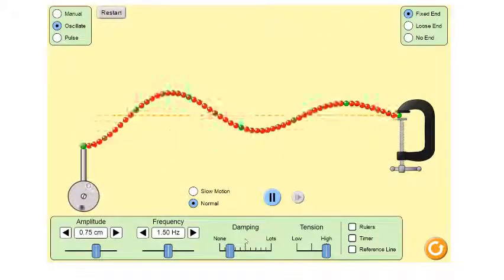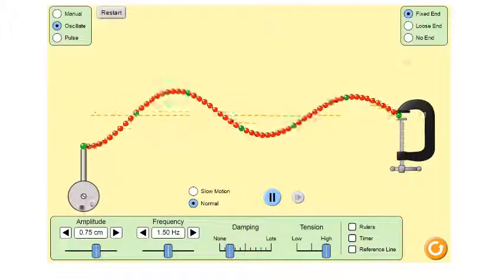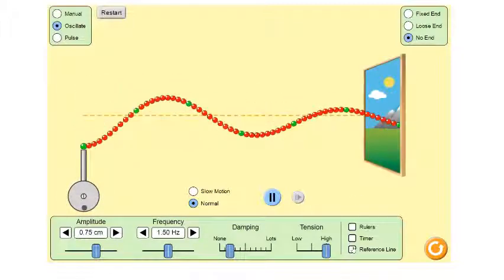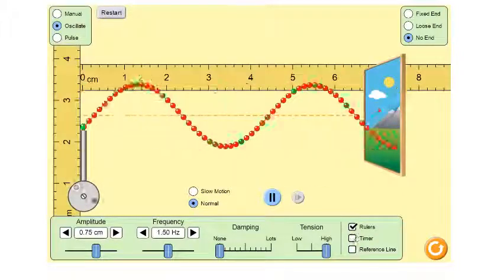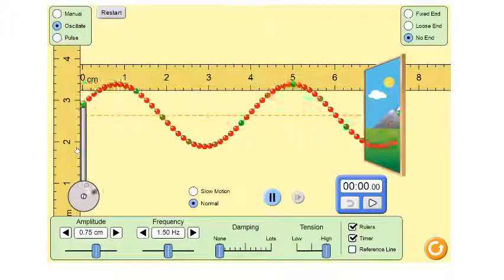Let's start that again. Set it to no end so the wave goes out the window. Confirm: no damping, high tension, rulers, and timer. Now you're going to create a wave like this one.